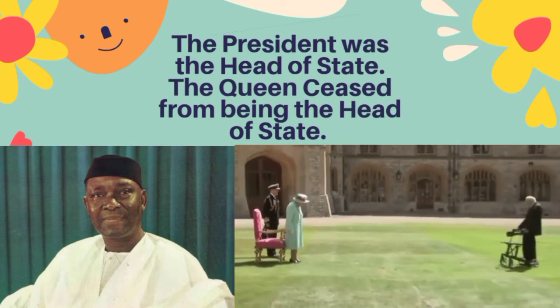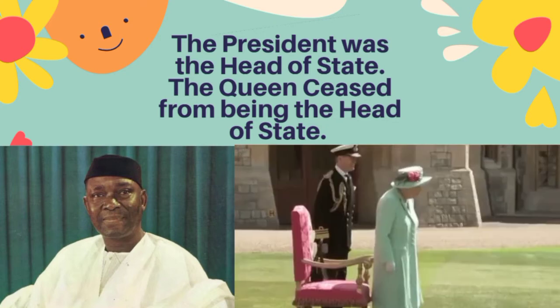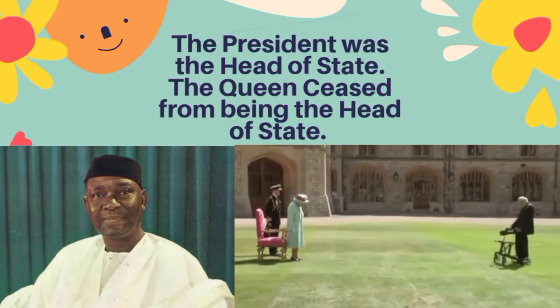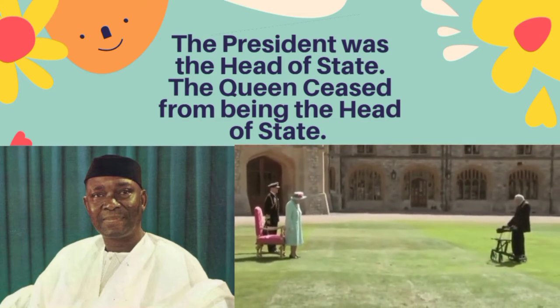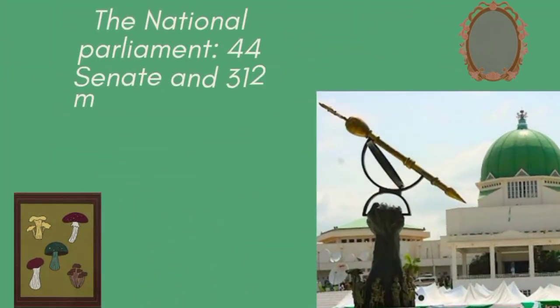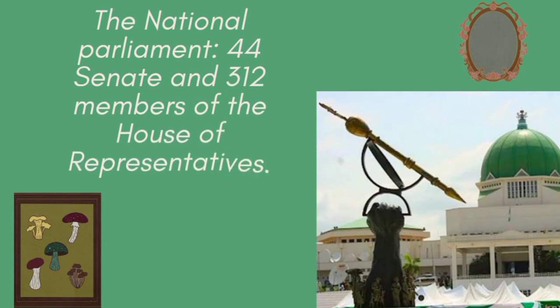As a result, the Queen of England ceased from being the head of state, as was the case in 1960 when the Queen was represented by the Governor General. Now there was no position of Governor General; it was replaced by the position of the president, who was the head of state. The national parliament was made up of 44 senate members and 312 members of the House of Representatives.